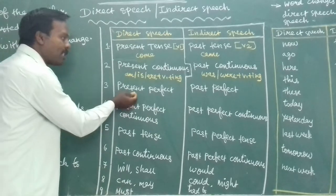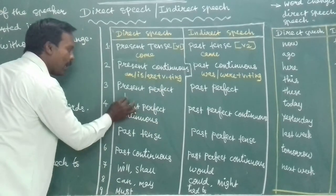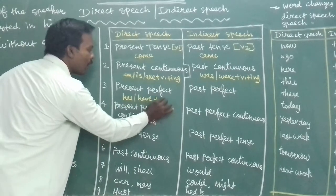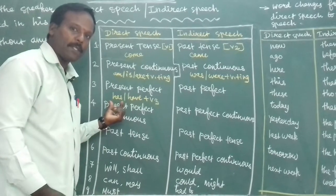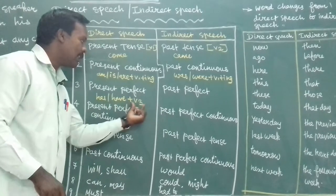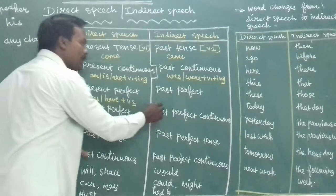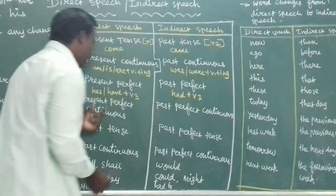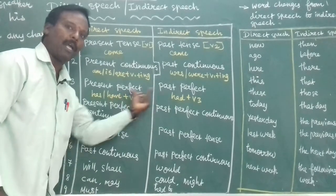Third tense change: present perfect tense changes to past perfect tense. Present perfect tense is formed with has or have plus V3. Has is used with third person singular — he has, she has — plus V3. I, we, you, they use have plus V3. V3 is the past participle. Past perfect tense is formed with had plus V3. For example: has gone or have gone becomes had gone.